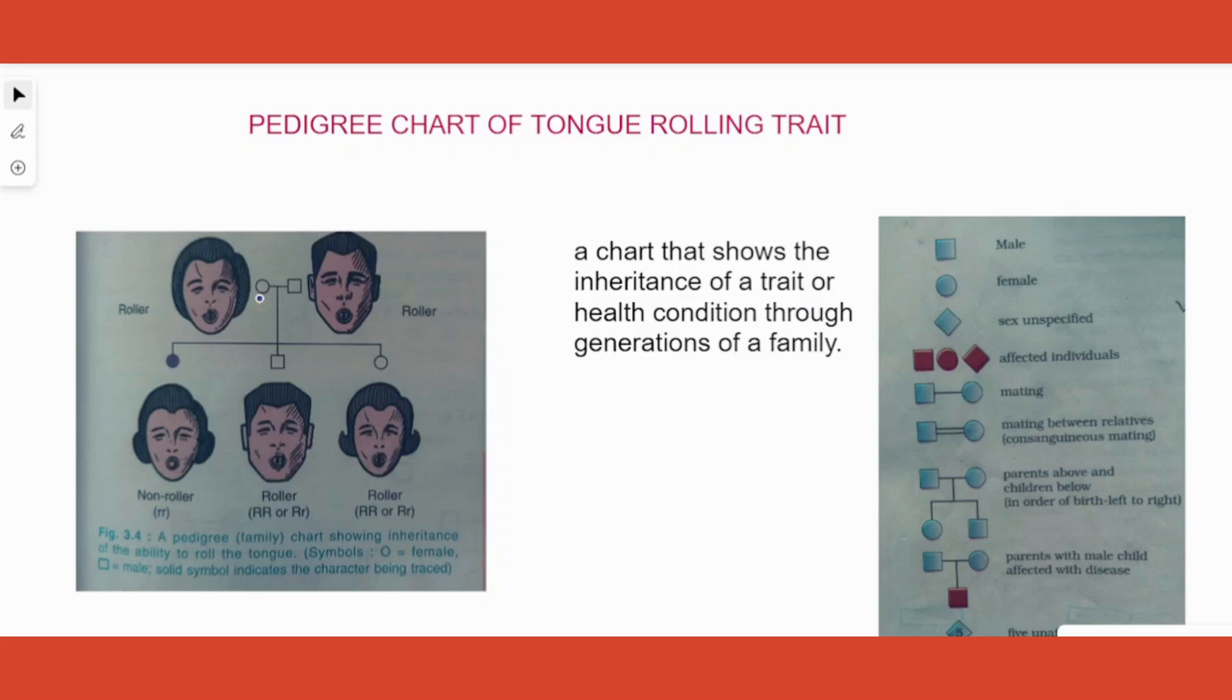If we have this female and a male and we have to tell among the progeny who all will get this trait or not. So first, what is the trait being studied here? Ability or inability to roll your tongue. You can see that there are certain symbols used. There's a circle here, there's a square here.